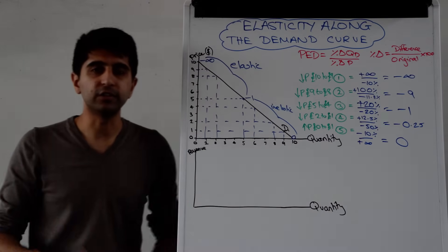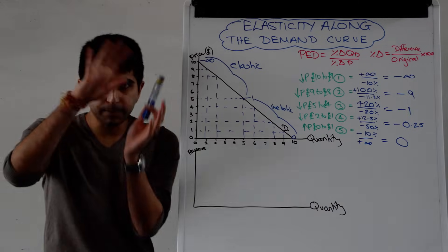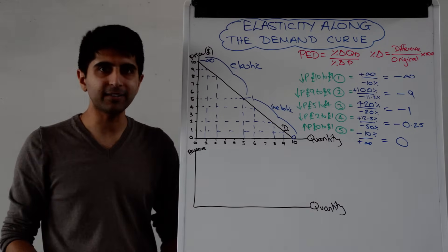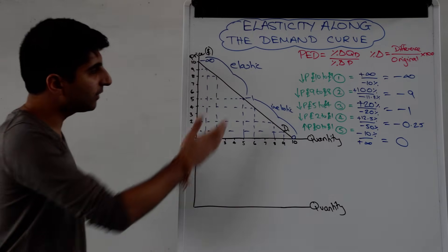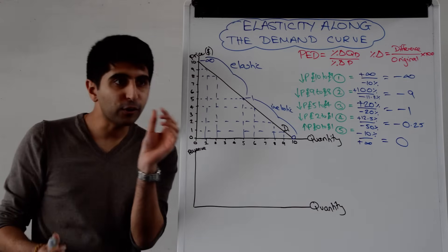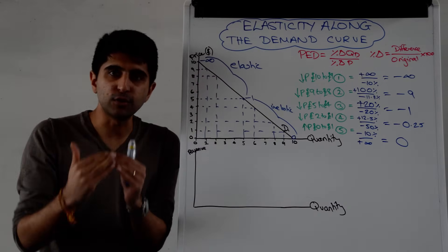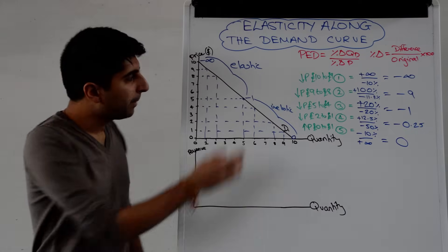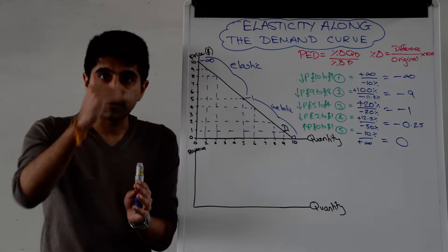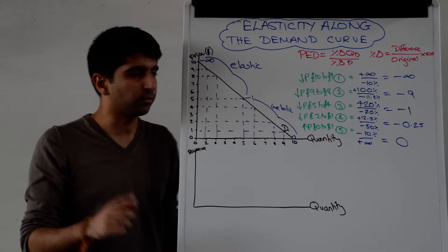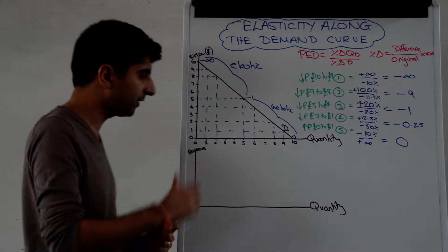This is also very helpful for linking PED to total revenue. It's clear that if we take price reductions, total revenue is going to be maximized where there is unit elasticity — the midpoint of the line. When there is elastic demand, it makes sense to keep reducing price to increase total revenue. But if we go into the inelastic portion and keep reducing price, total revenue is going to fall. Therefore, to maximize total revenue, you want unit elastic demand — and at that point, don't change your price either way.